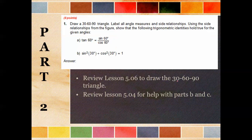To draw the 30-60-90 triangle, if you'll go back to Lesson 506, that talks about the 30-60-90 triangle and what we know about those trig identities. For Parts B and C, to prove that these are true, all you're going to do is just solve them out. You can review Lesson 504 to help you, or you can just solve them out.